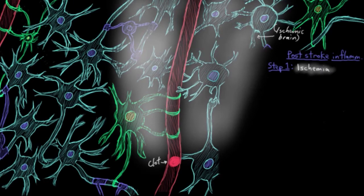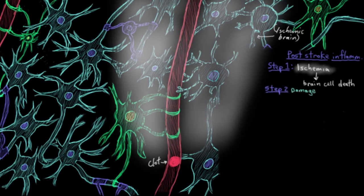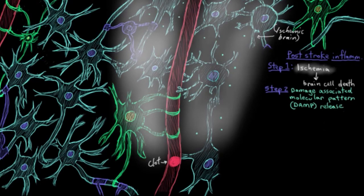And step two, we haven't actually seen this step before, but while the neurons are dying, they release these little chemical signals called damage associated molecular patterns, or DAMPs. So as their name might suggest, they're these tiny little signals that let other cells in the area know that something bad is going on. And these DAMPs then trigger an inflammatory response.